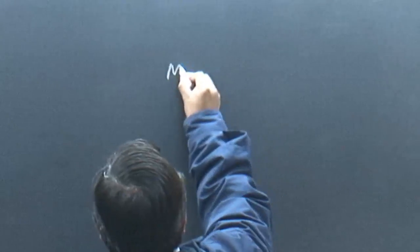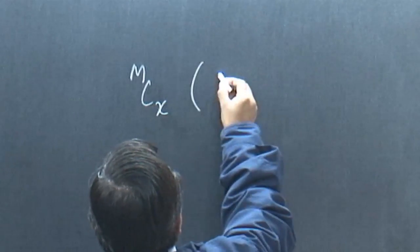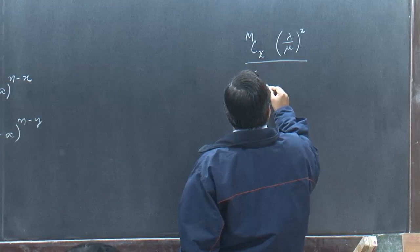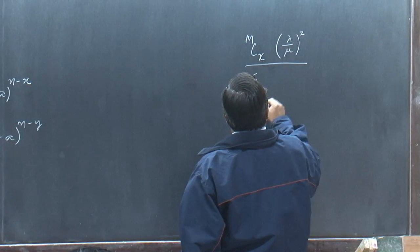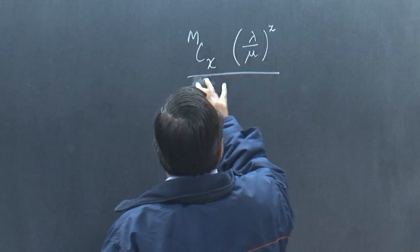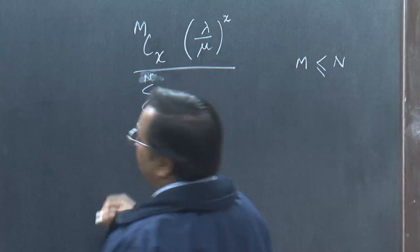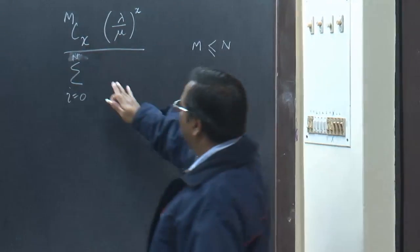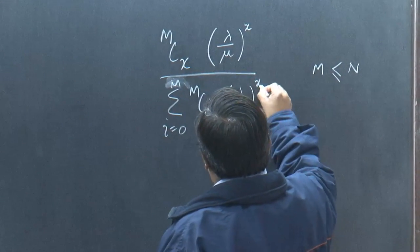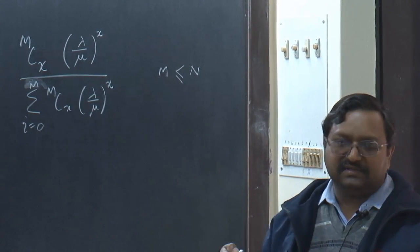Very quickly recalling: the probability of being in state x was given for x ranging from 0 to m. We are taking the case where m is smaller than n. This can only go up to m — you can only have m occupancy, not n. That is the probability of being in state x, and correspondingly the same holds for state y.